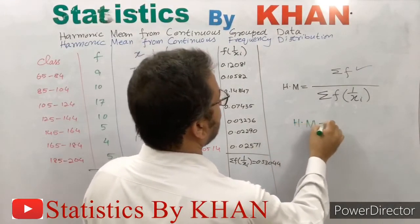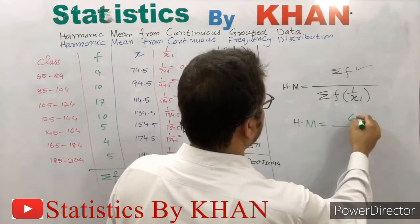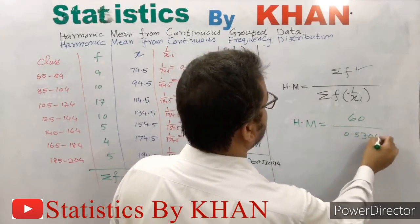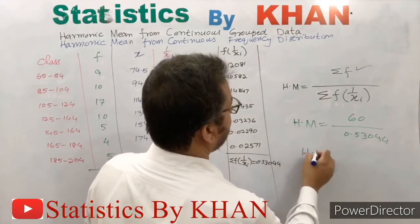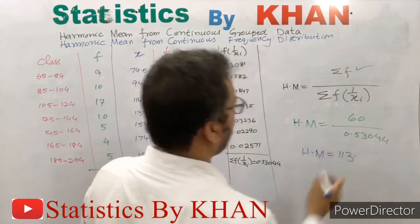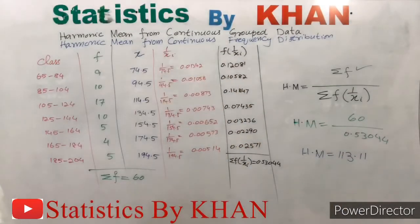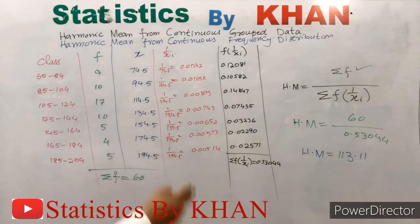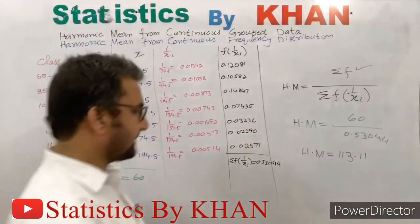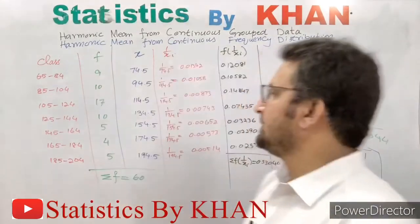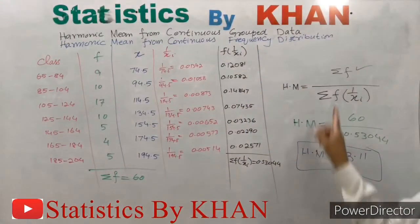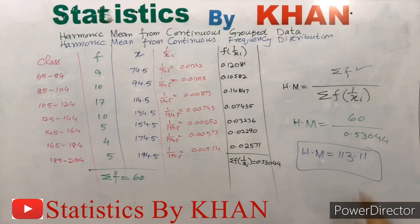Now plugging the values into the formula: Harmonic Mean = 60 divided by 0.53044. Simplifying this gives us 113.11. So the harmonic mean for this data sheet is 113.11. This is the final answer — the harmonic mean from continuous group data or continuous frequency distribution.